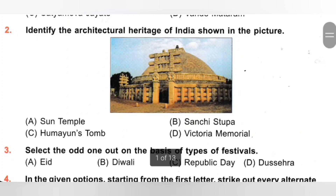Second one. Identify the architectural heritage of India shown in the picture. A. Sun Temple, B. Sanchi Stupa, C. Humayun's Tomb, D. Victoria Memorial. The architectural heritage shown in the picture is Sanchi Stupa. It was built by Emperor Ashoka and is located in Madhya Pradesh. Option B, Sanchi Stupa, is the correct answer.